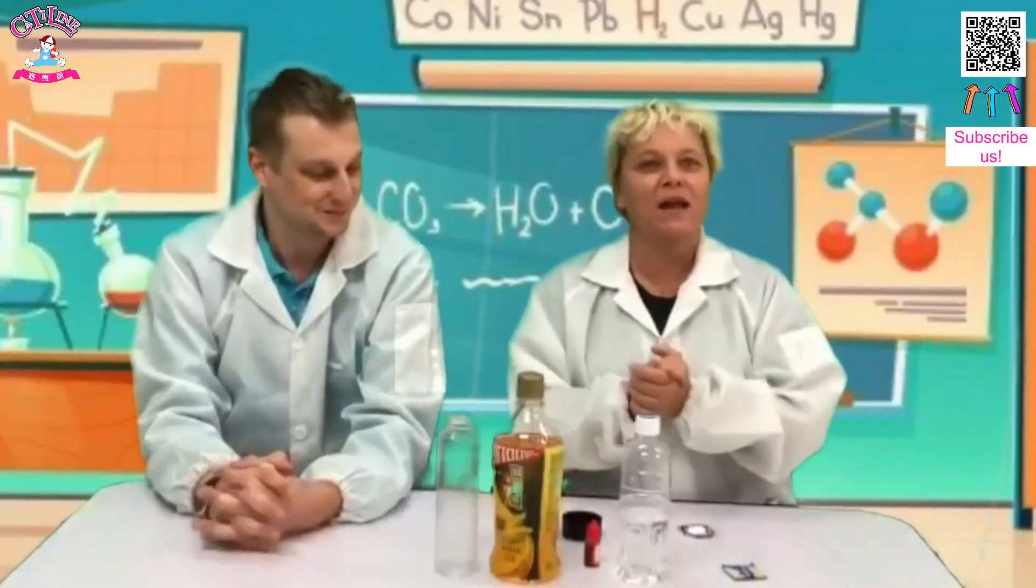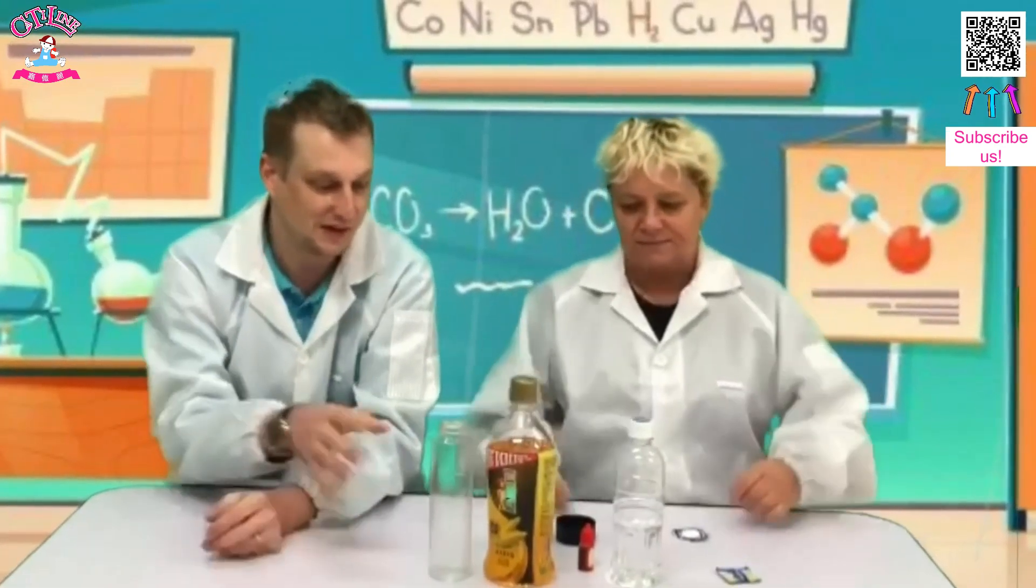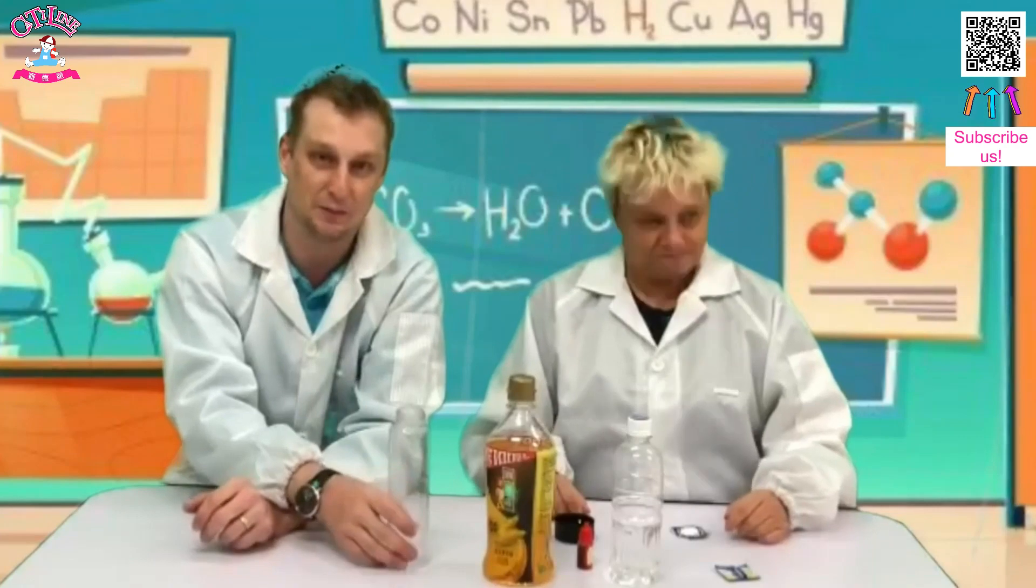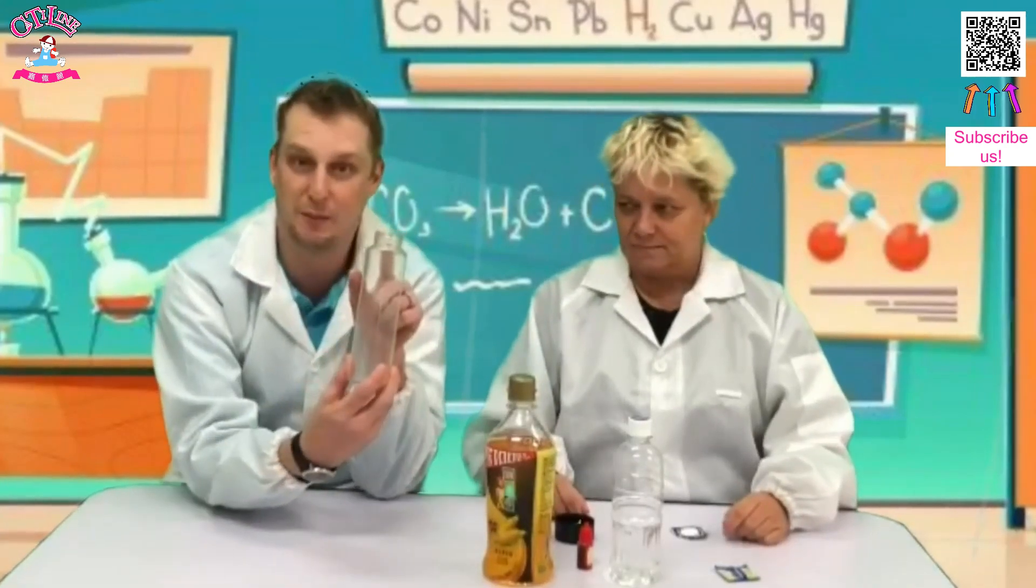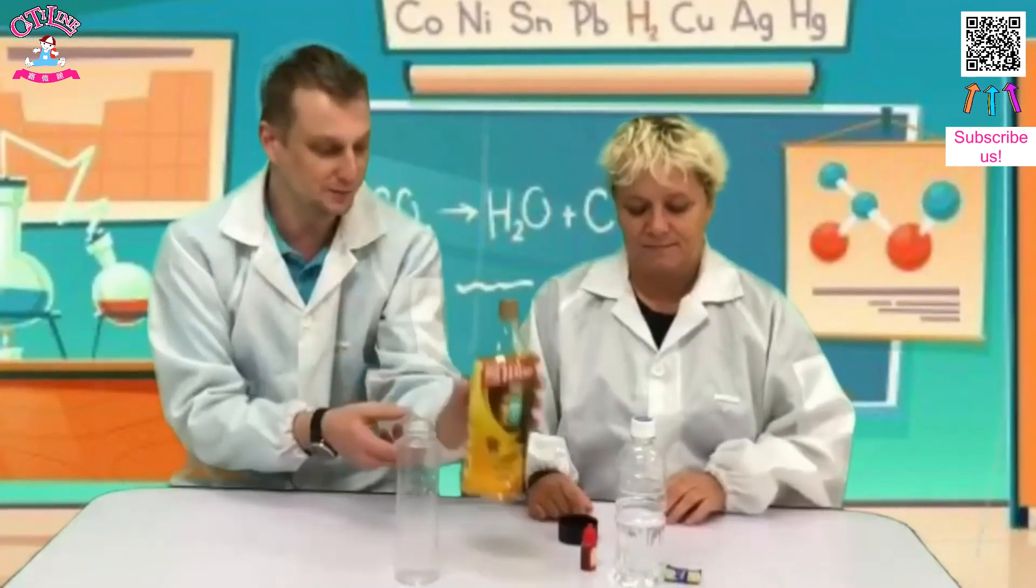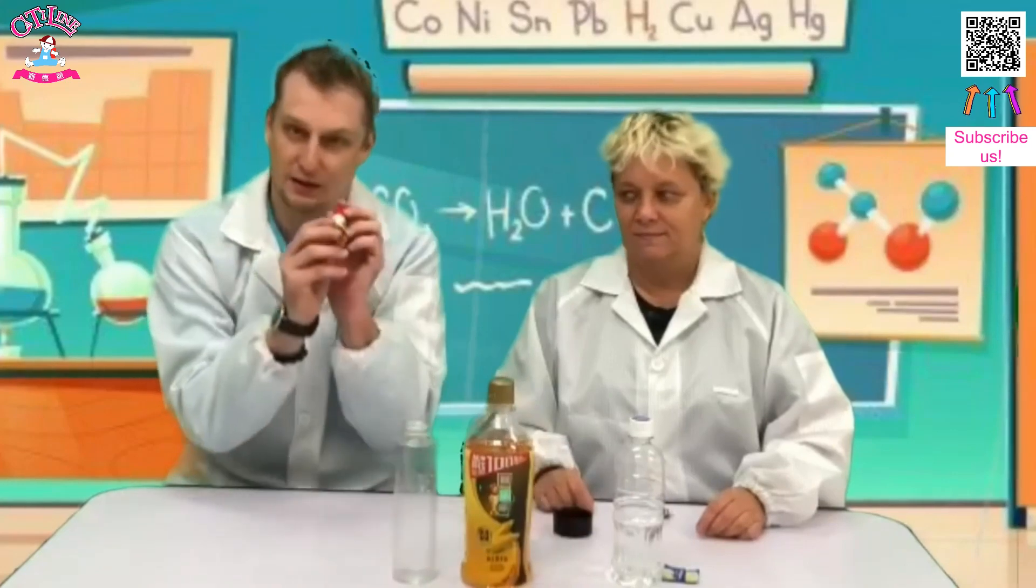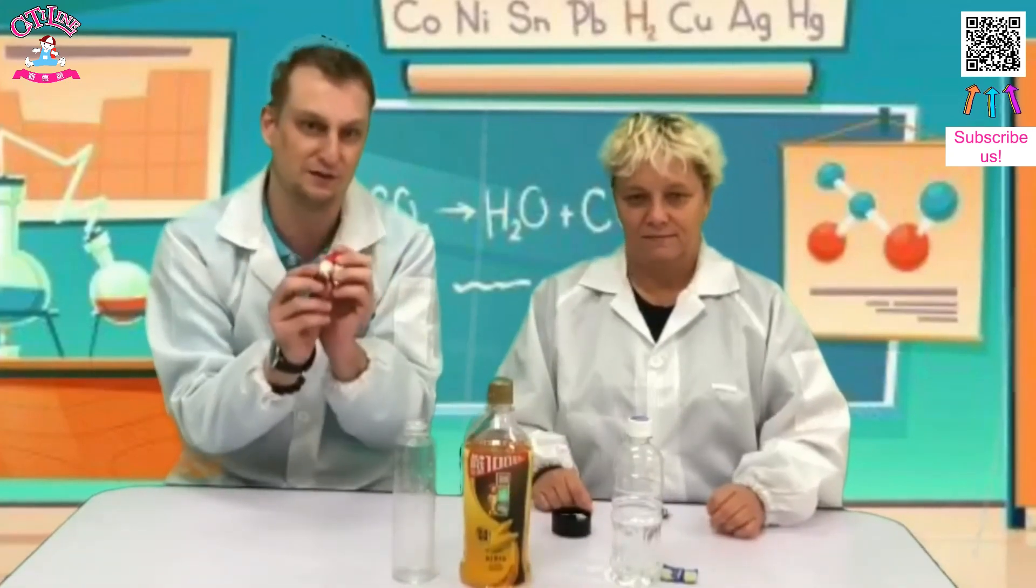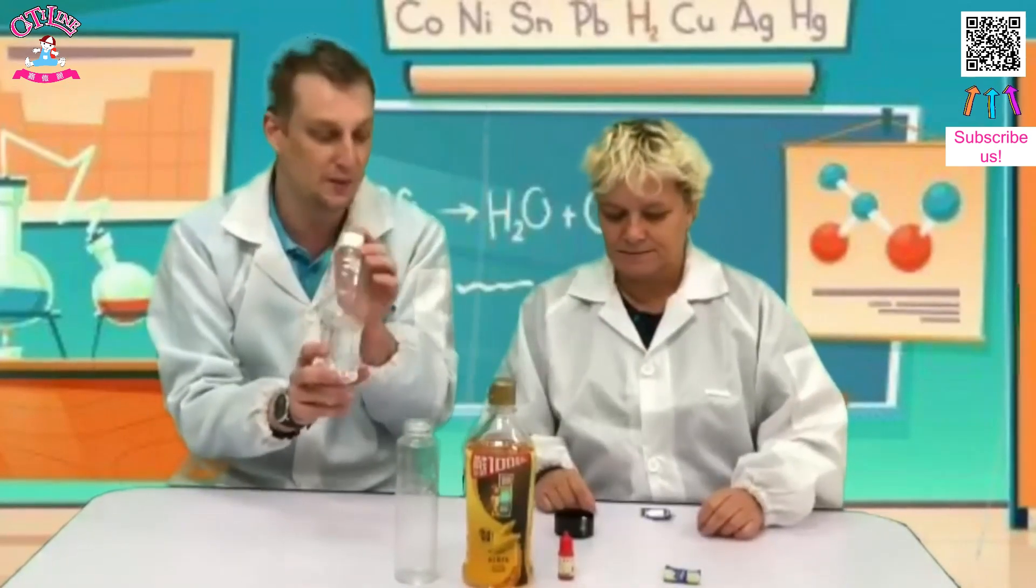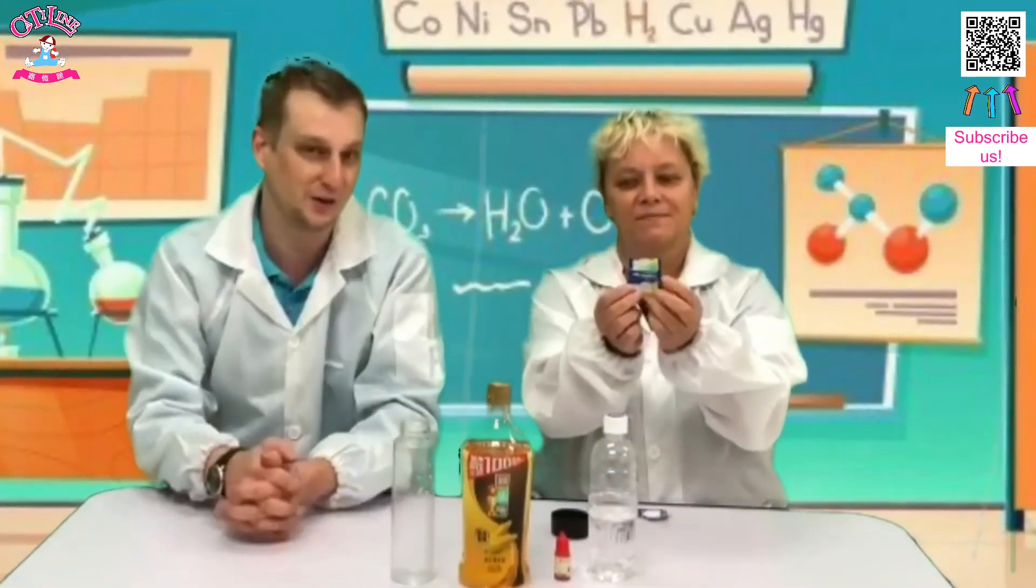Okay, to make our own lava lamp you just need a few ingredients. These are all things that we can find at home. So we can find a plastic bottle, we have some cooking oil, we have some food coloring - you can pick any colors that you want - we have some water, and lastly we have some Alka-Seltzer tablets.